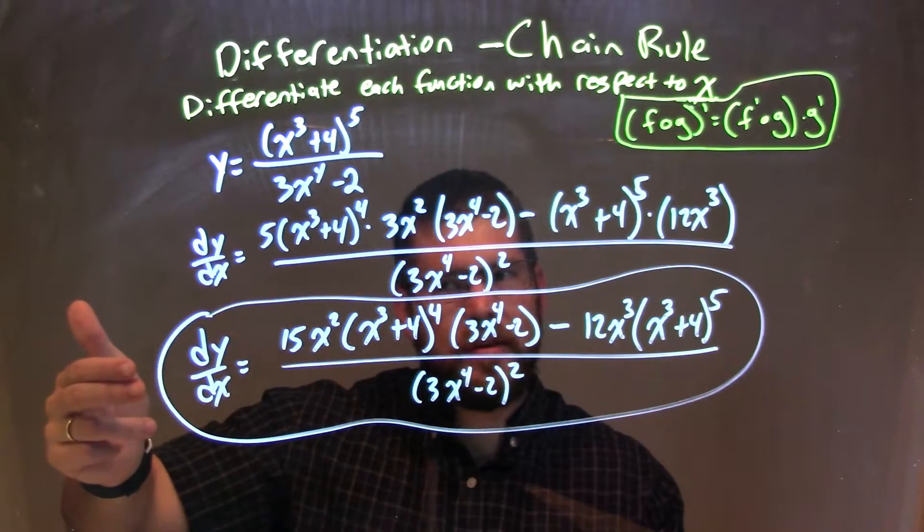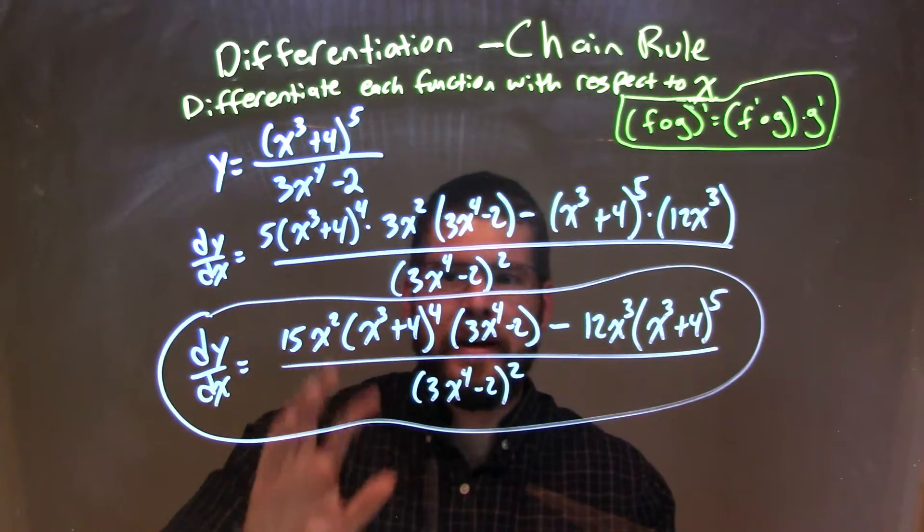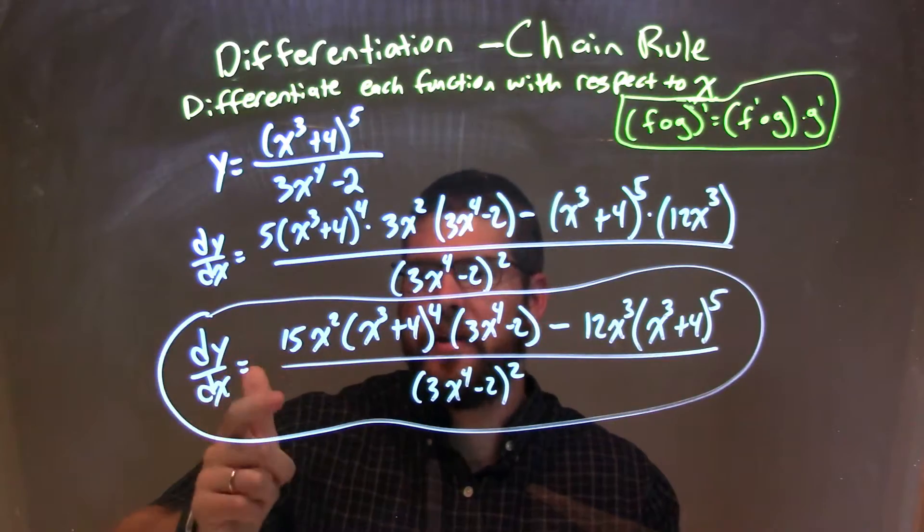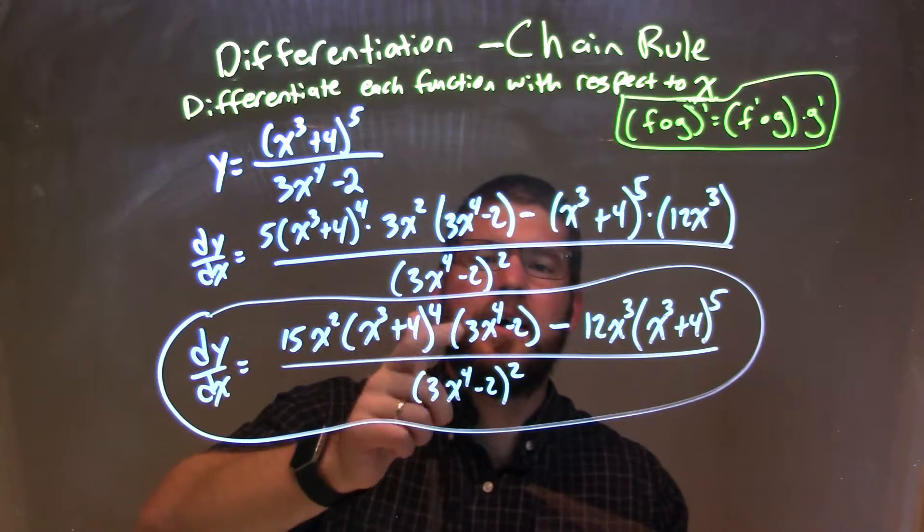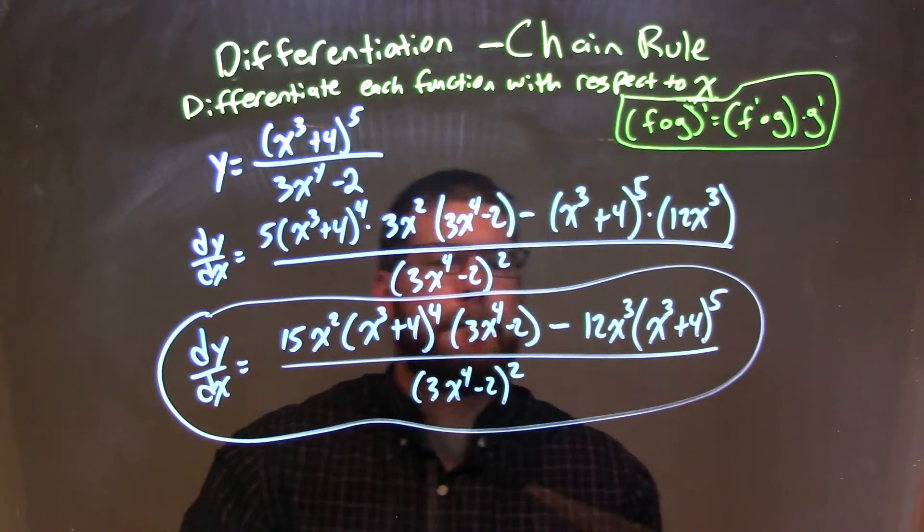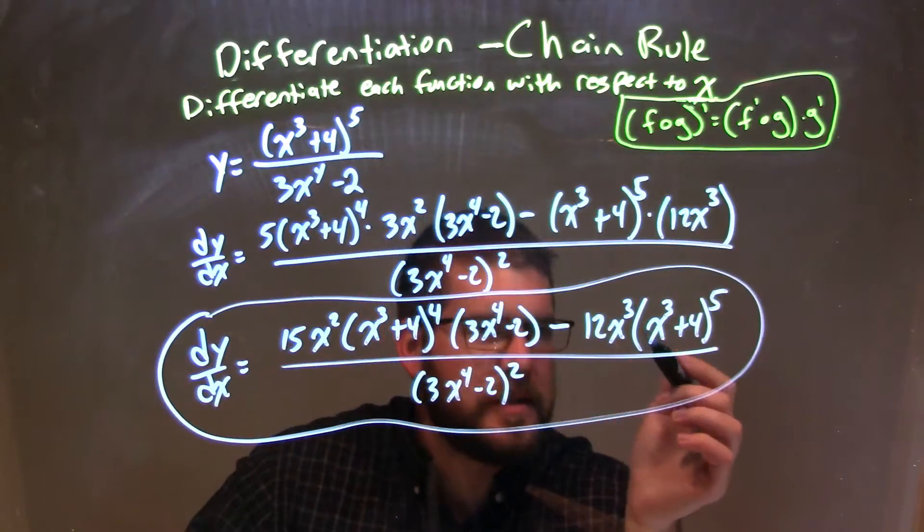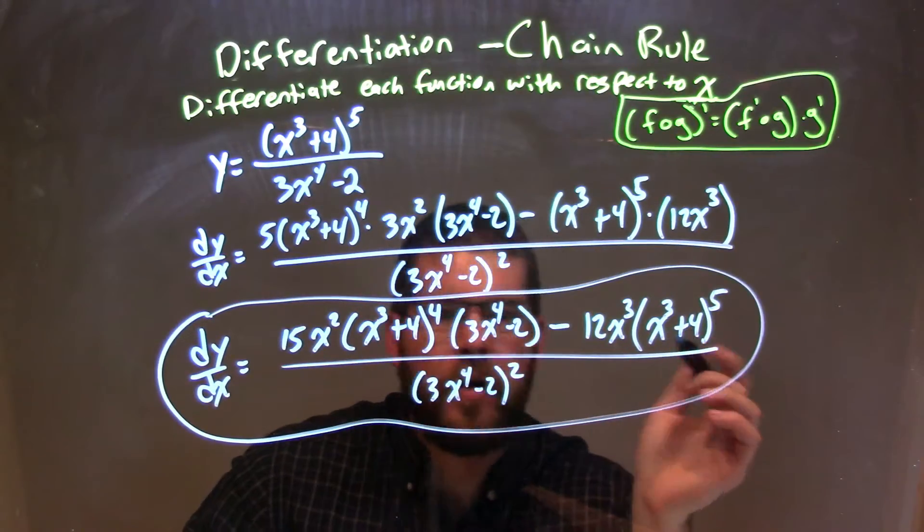There, I just did a quick little simplification here, to get my final answer. I got dy dx is equal to 15x squared times x to the third plus four, all to the fourth power, times 3x to the fourth minus two, minus 12x to the third times x to the third plus four, all to the fifth power, all of that over 3x to the fourth minus two squared.